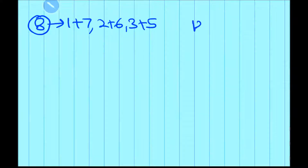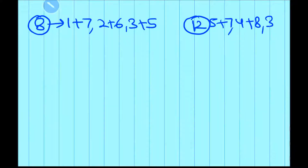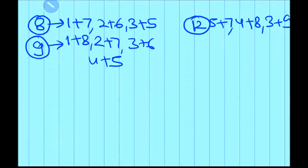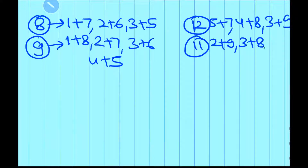For sum 12 also, there are 3 combinations: 5 plus 7, 4 plus 8, and 3 plus 9. For sum 9, there will be 4 combinations: 1 plus 8, 2 plus 7, 3 plus 6, and 4 plus 5. For sum 11, there will be 4 combinations: 2 plus 9, 3 plus 8, 4 plus 7, and 5 plus 6.